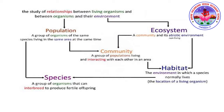A community leads to the concept of habitat. Habitat is a place or environment in which a species normally lives — in other words, the location of a living organism. A population is a group of organisms of the same species living in the same area at the same time. A species is a group of organisms that can interbreed to produce fertile offspring.